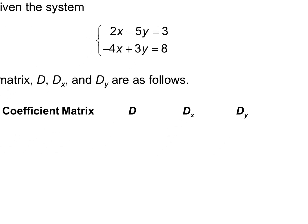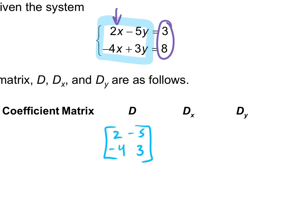In one matrix, we're just going to put our coefficients, without the answers. So our coefficient matrix is going to be 2, negative 5, negative 4, and 3. Our next matrix, D sub X, our X matrix — we're going to put the answers in the X column. So the answers, 3 and 8, go in our X column. The rest of the matrix stays the same: negative 5, 3.